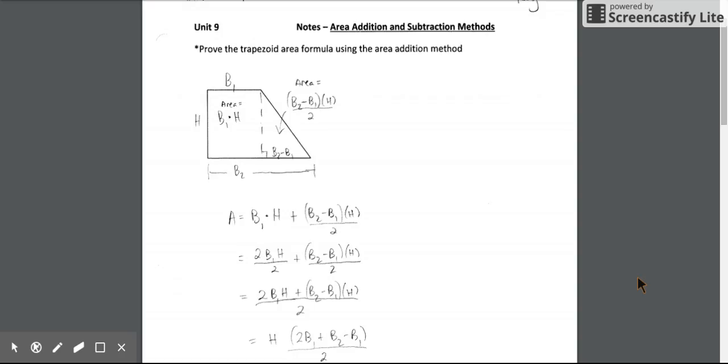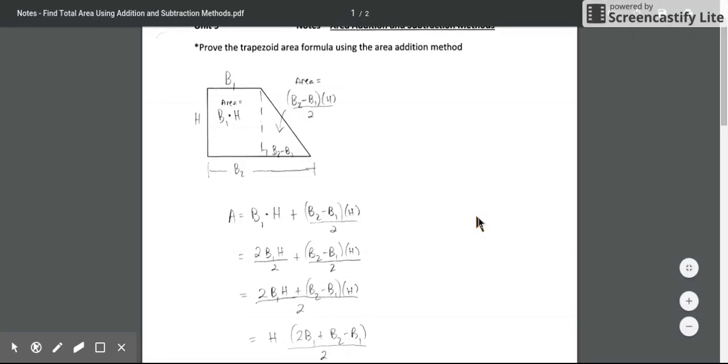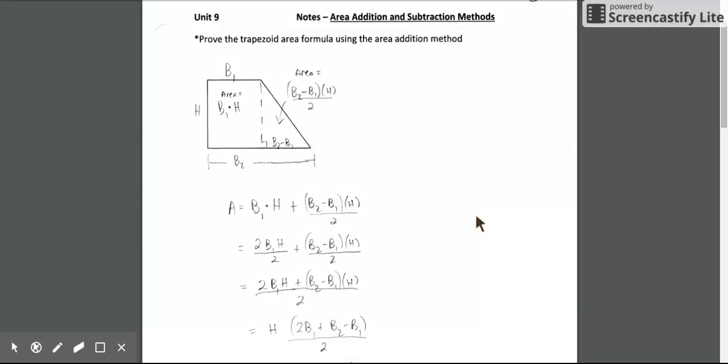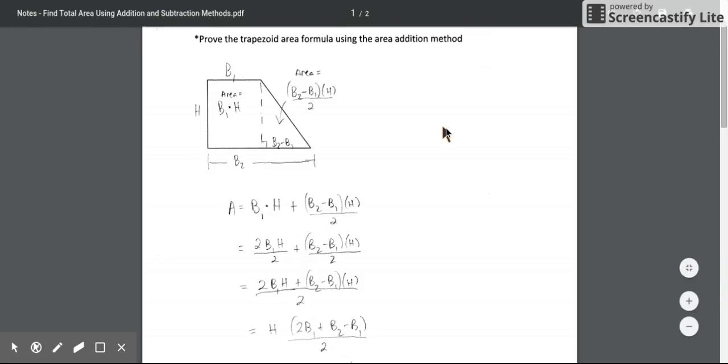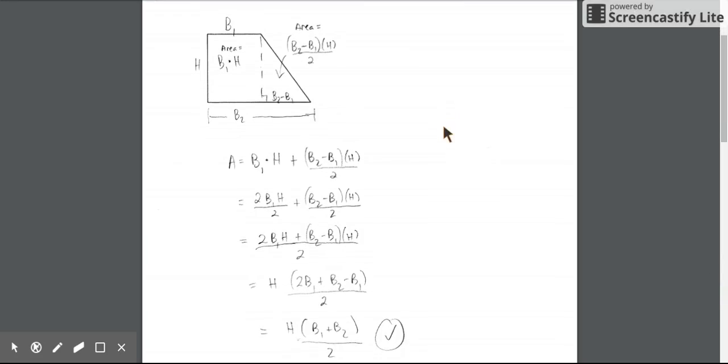Before we do that, I just want to give you an example of where this is often used. Sometimes this technique is used to come up with a formula that we've been using this whole time. So we know that area of a trapezoid is adding up the two bases, multiplying by the height and dividing by two. That's one way to do it. And the reason why is because it really comes from breaking up a trapezoid into a rectangle and a triangle. So I'm going to walk you through this, and then we'll actually get into the area addition and subtraction methods.